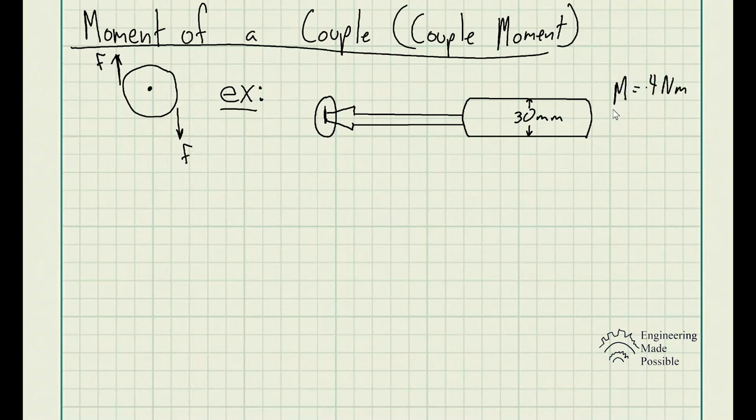So we're going to write that down. Our moment is 4 newton meters and it's asking us to resolve this couple moment into its forces that we're exerting. In this case, the screwdriver is being turned by a hand, but it's two forces that are equal and opposite to each other.